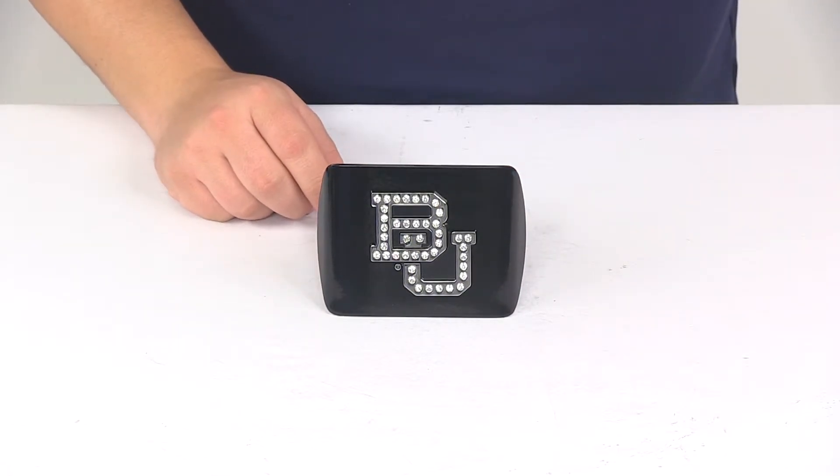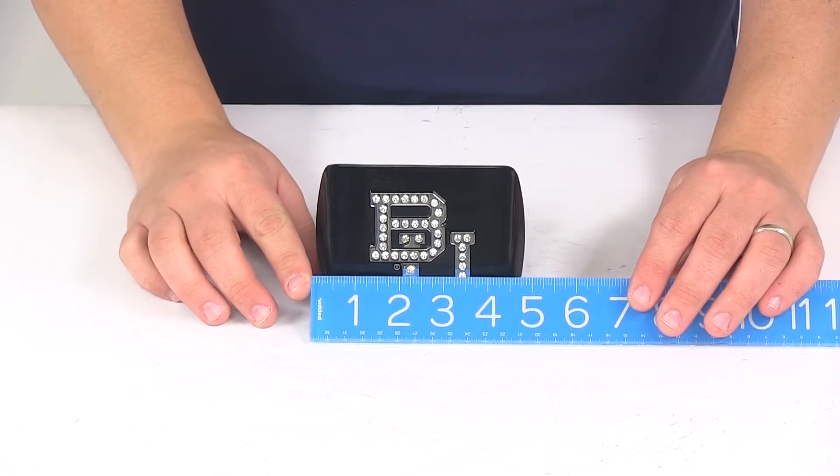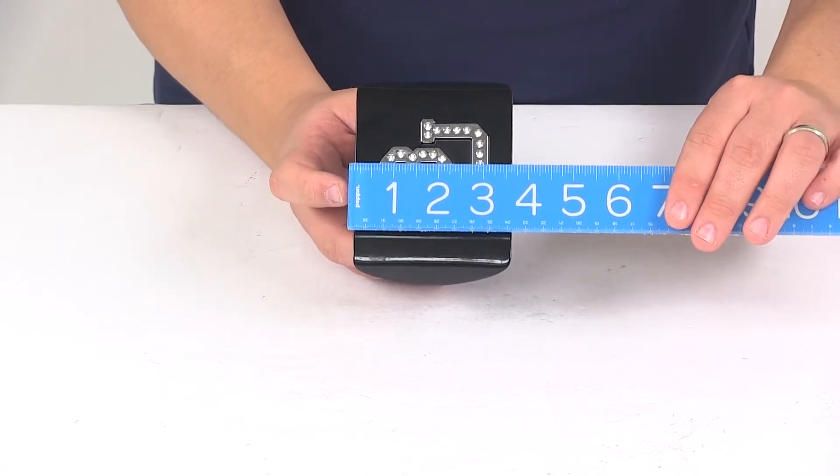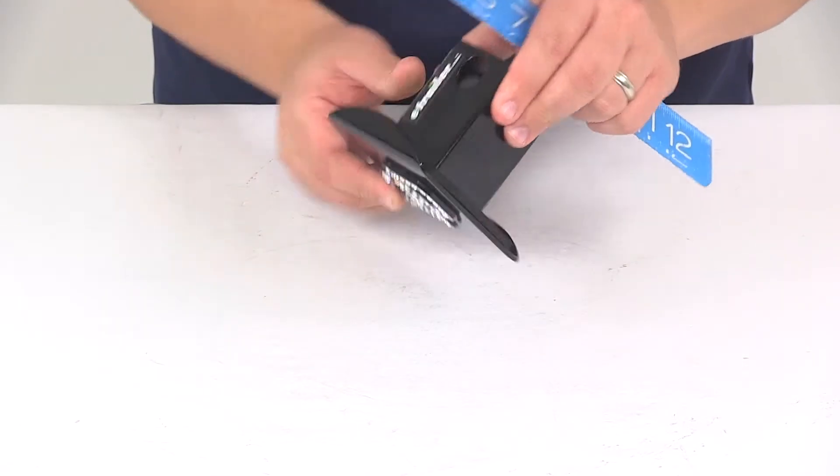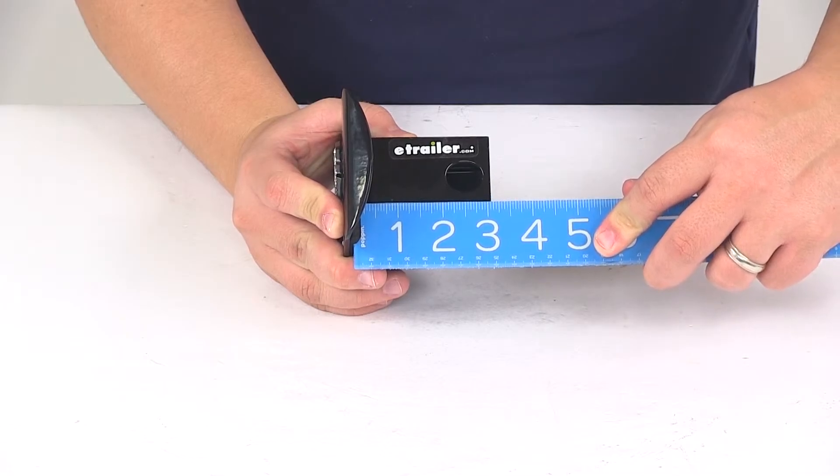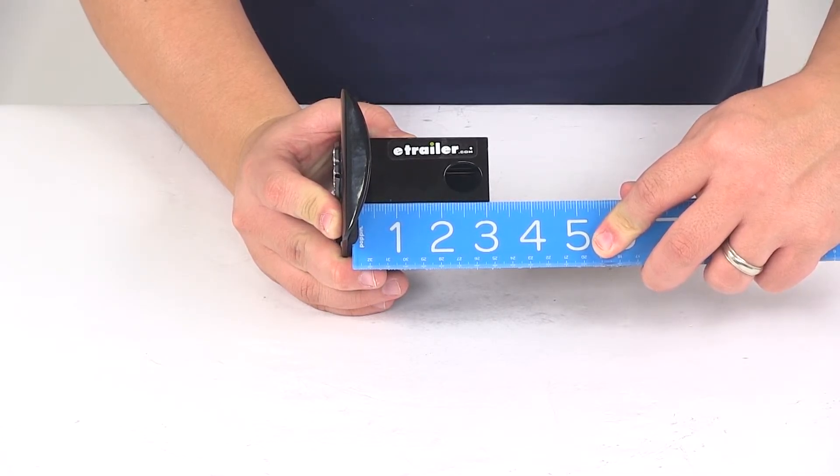A few measurements to go over with you real quick. The overall width at the face measures about five inches. Overall height measures about three and a half inches, and the distance from the back of the foam pad to the center of the hitch pinhole measures about two and a half inches.